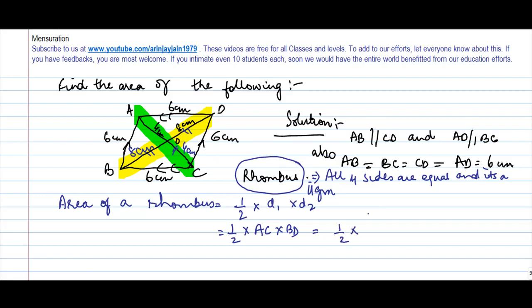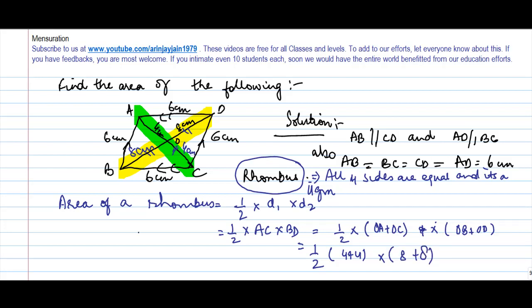Half into AC. So AC is equal to OA plus OC, and BD is equal to OB plus OD. That gives us half into (4 plus 4) into (8 plus 8), which is half into 8 into 16, giving us 64 cm square. So this is the area of this rhombus.